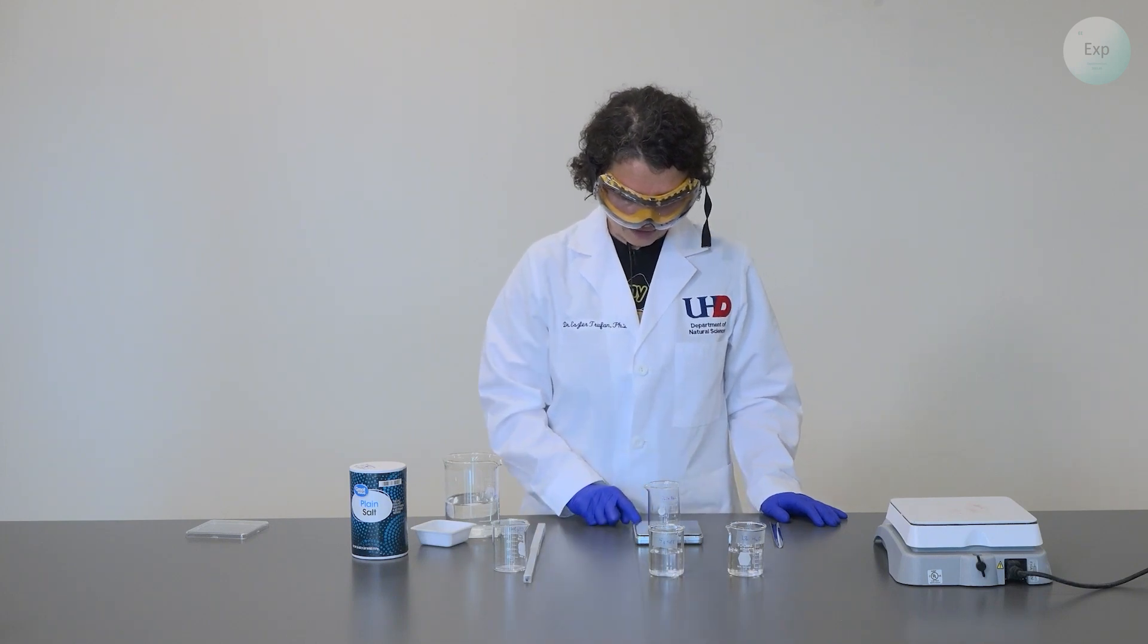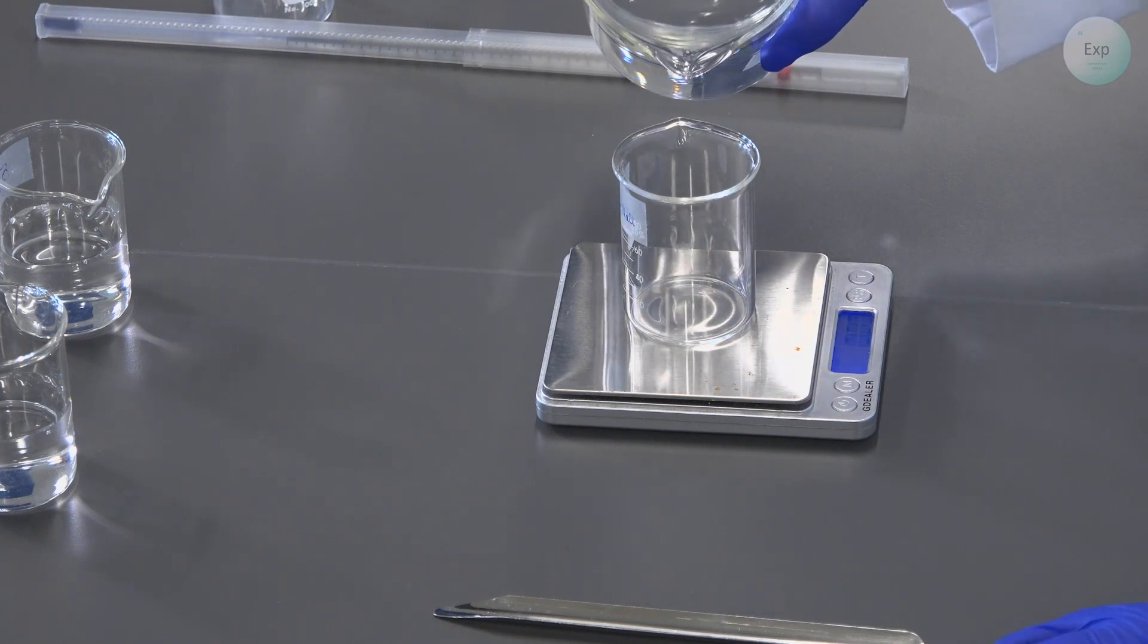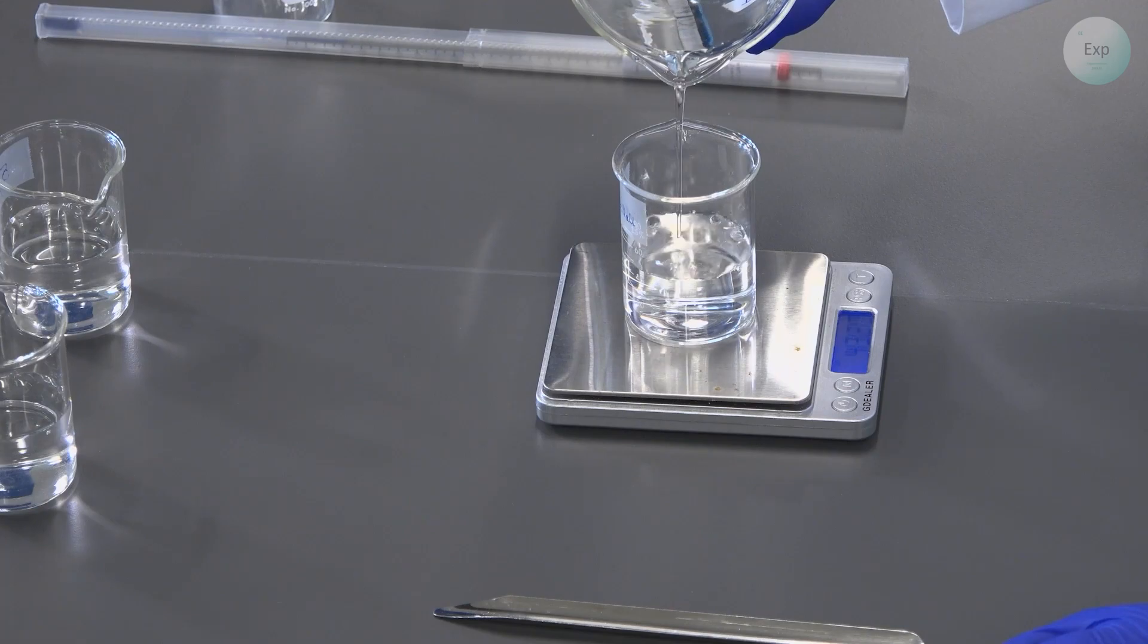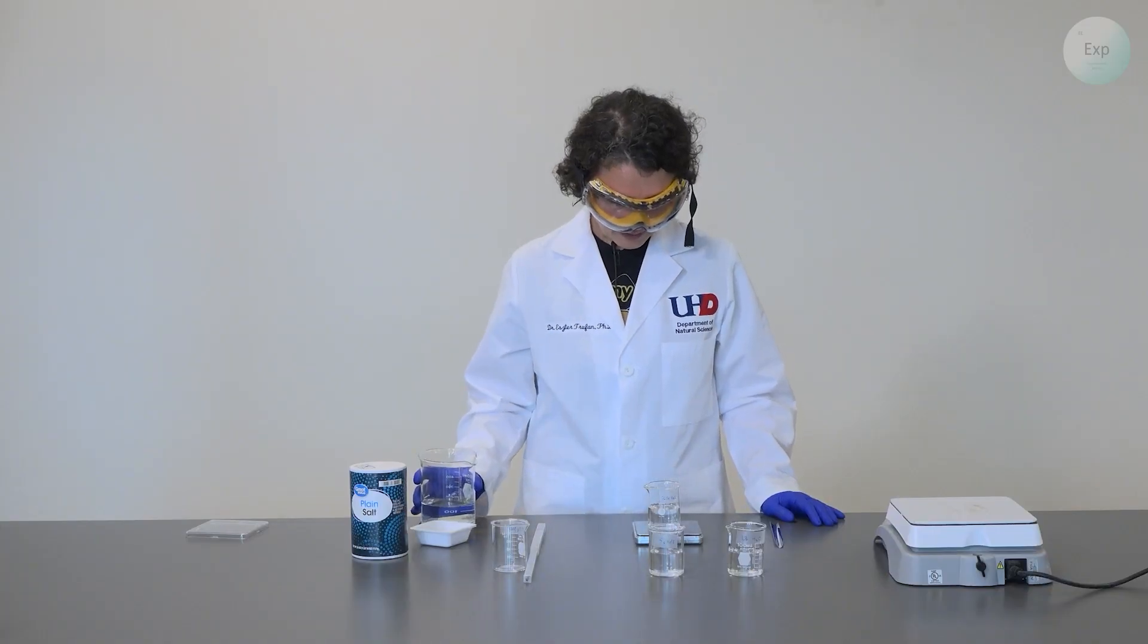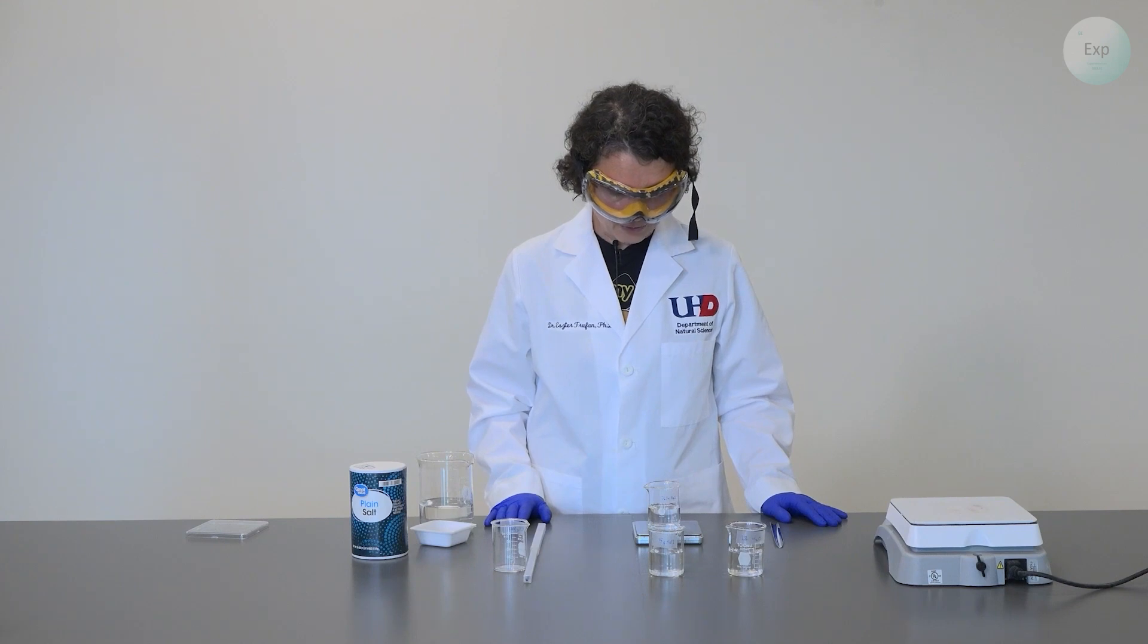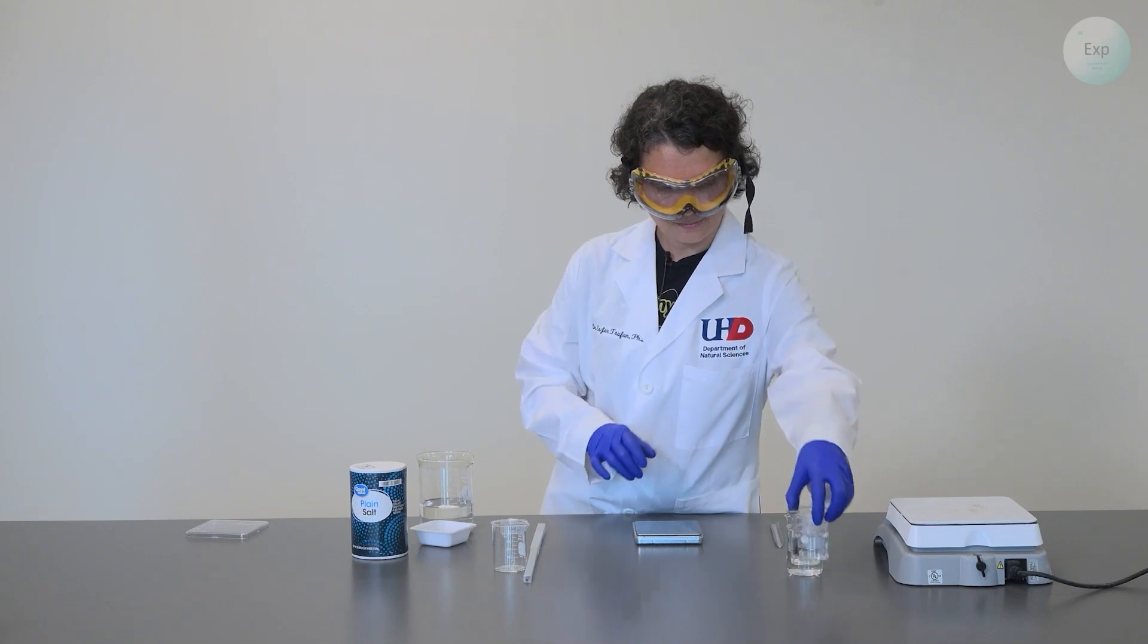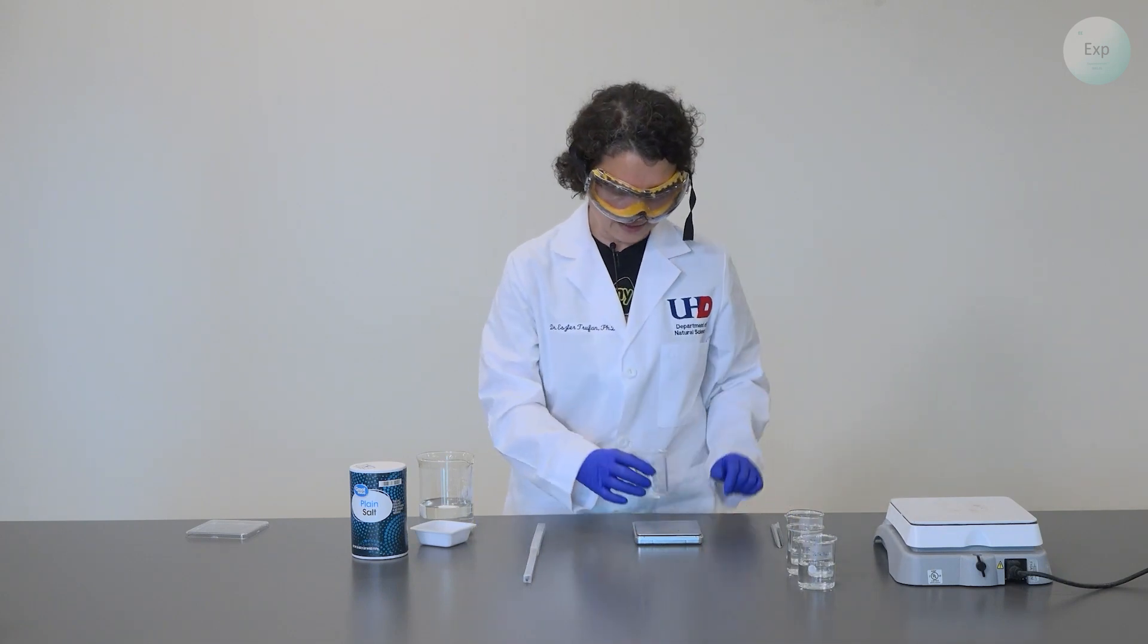Next, I will place my third beaker on the scale, tare it, and add 50 grams of water to it. I am very close at 49.89 grams. This one will have 7.5 grams of sodium chloride added to it later.